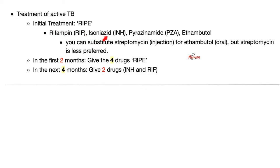For active TB, the famous four — rifampin, isoniazid, pyrazinamide, ethambutol — are taken in the first two months of treatment. In the next four months, take just two drugs: isoniazid and rifampin. What is the most common cause of treatment failure for tuberculosis? Non-compliance. Have you ever tried taking a medication for six straight months? It is very difficult — try it and you will have compassion for your patients.